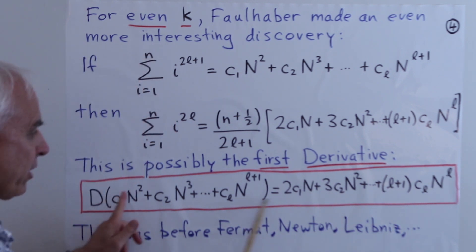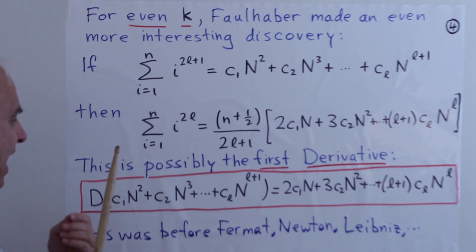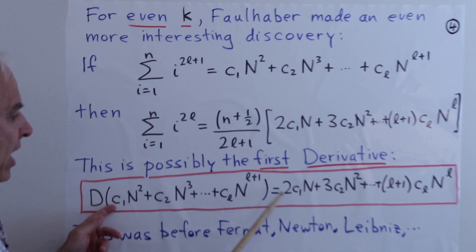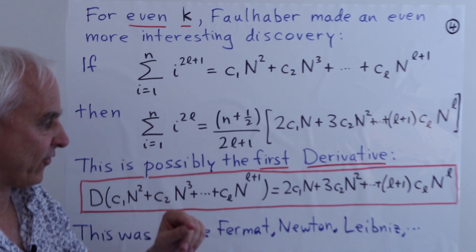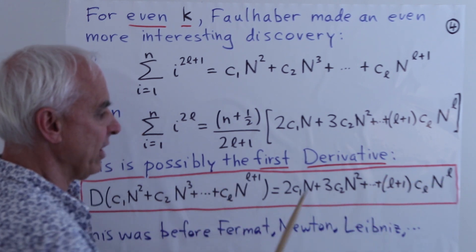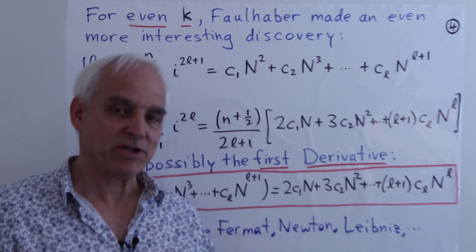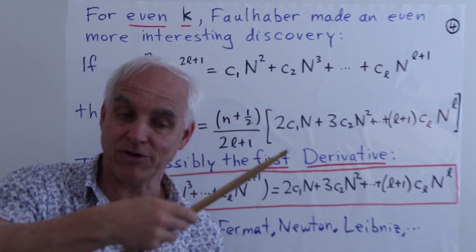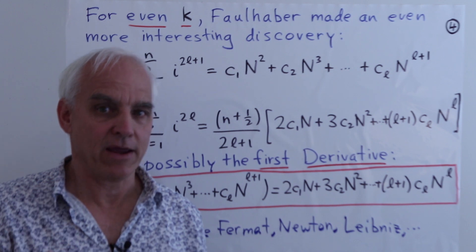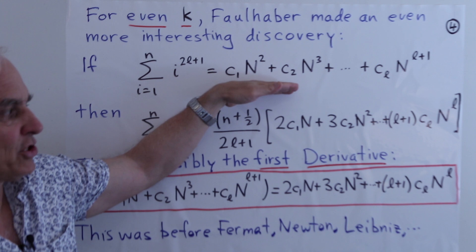This procedure is very familiar to anyone who has studied calculus: we're taking the derivative in the algebraic sense. We take a term, bring the exponent down as a factor, and the new exponent is one less — the 2 comes down and the power becomes 1, the 3 comes down and 3 is replaced by 2, and so on. Crucially, this was before the development of calculus — before Fermat, Newton, and Leibniz — a purely algebraic derivative observed by Faulhaber.